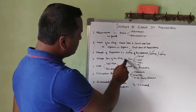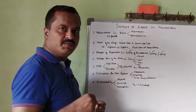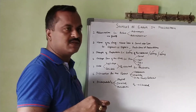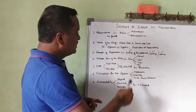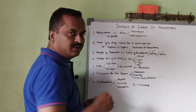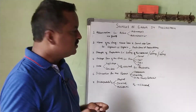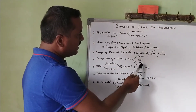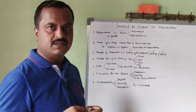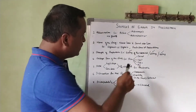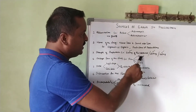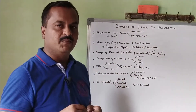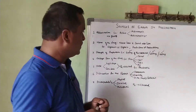The fourth error involves the dosage form of the drug. Most drugs are available in different dosage forms. For example, paracetamol is available as a syrup, capsule, tablet, and injection. The pharmacist must clarify with the physician which dosage form is to be prepared.